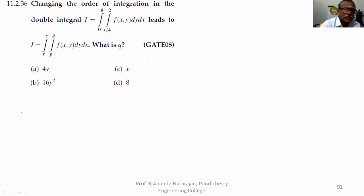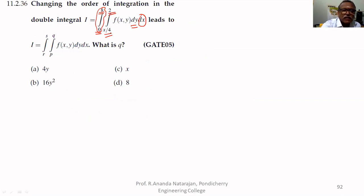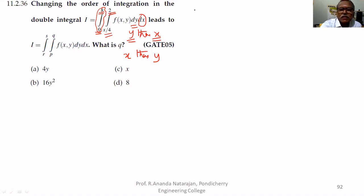Changing the order of integration. The order of integration means the final integration must not have any variable in its limits. The final integration here is dx — done with respect to x — and we see the limits don't have any variables. But the first integration is with respect to y, and the limit is in terms of x. We want to change the order of integration: currently it is first dy then dx, and we want to change it to dx then dy. That is called the change of order of integration.